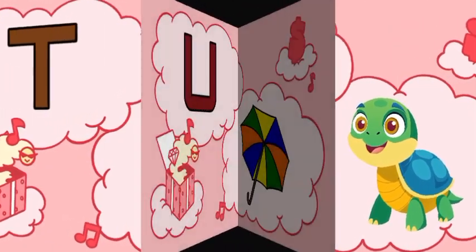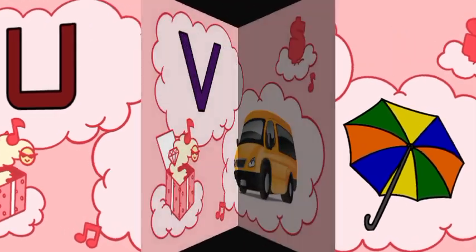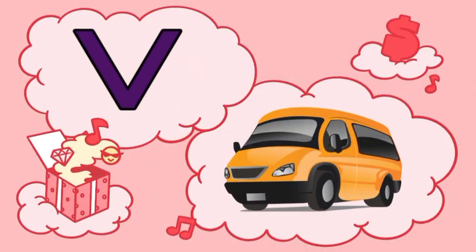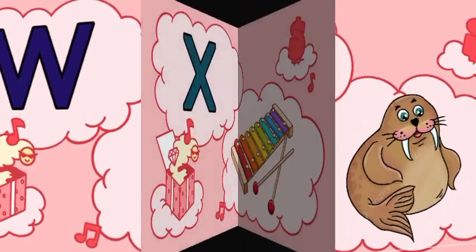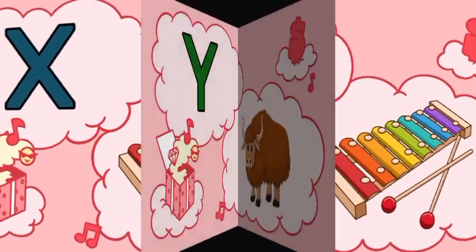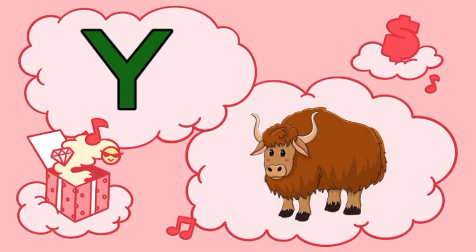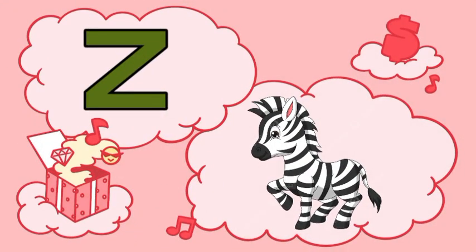U for Umbrella, V for Van, W for Walrus, X for Xylophone, Y for Yak, Z for Zebra.